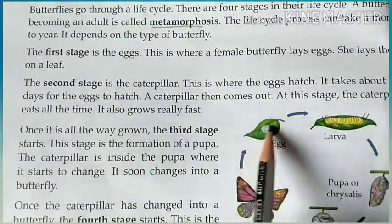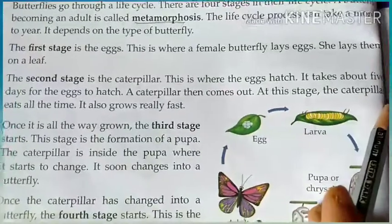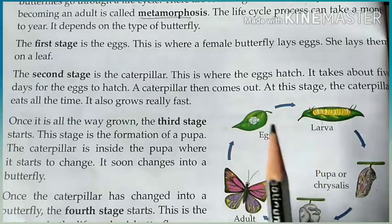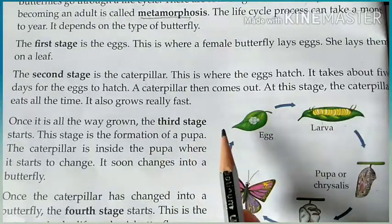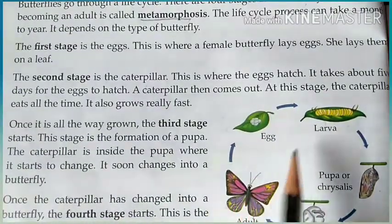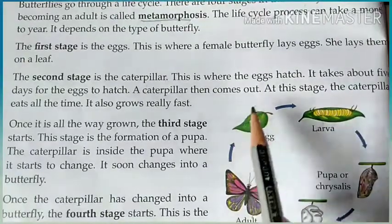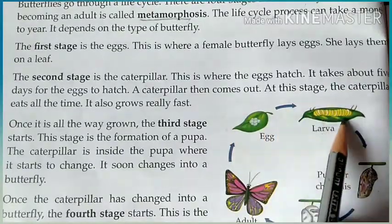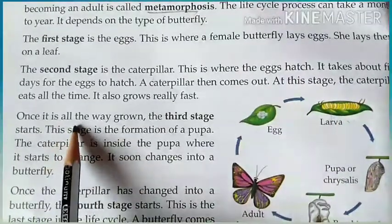The second stage is the caterpillar. This is where the egg hatches — it takes about 5 days for the eggs to hatch. The caterpillar comes out and eats all the time; that is its only job. Because it eats so much, it grows very fast. Once the caterpillar is fully grown, the third stage starts.